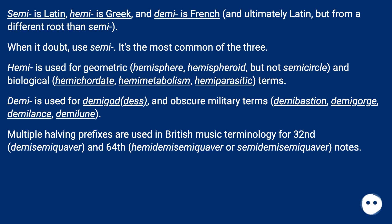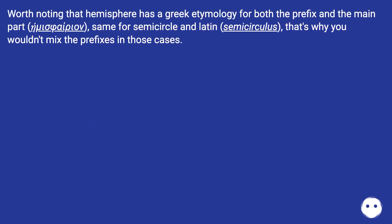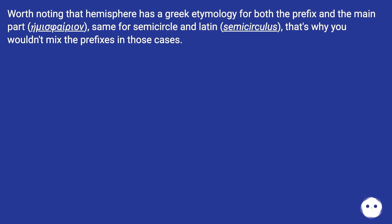Multiple halving prefixes are used in British music terminology for 32nd notes — demisemiquaver — and 64th notes — hemidemisemiquaver or semidemisemiquaver. Worth noting that hemisphere has a Greek etymology for both the prefix and the main part, and the same is true for semicircle in Latin — semicirculus — which is why you wouldn't mix the prefixes in those cases.